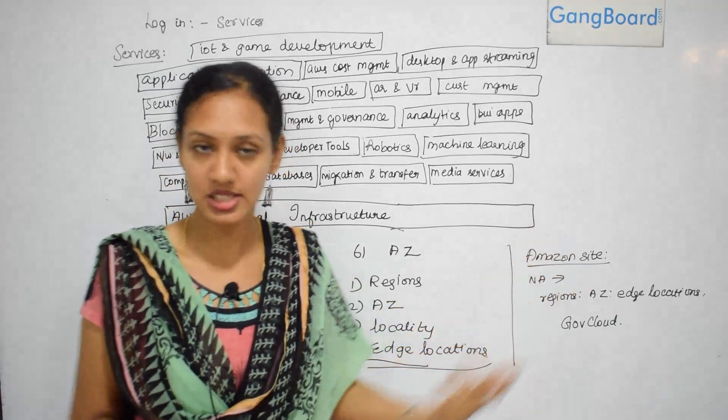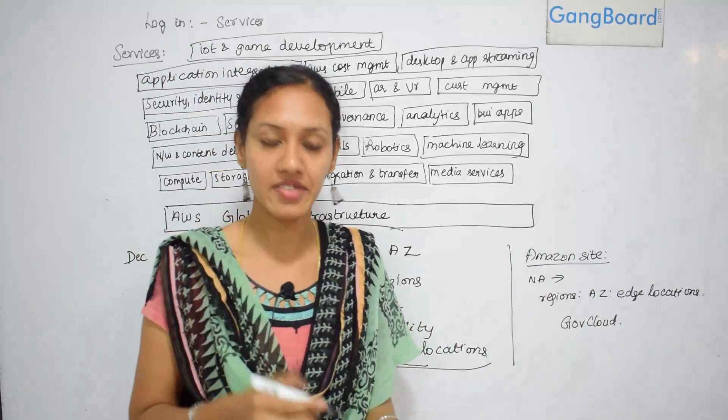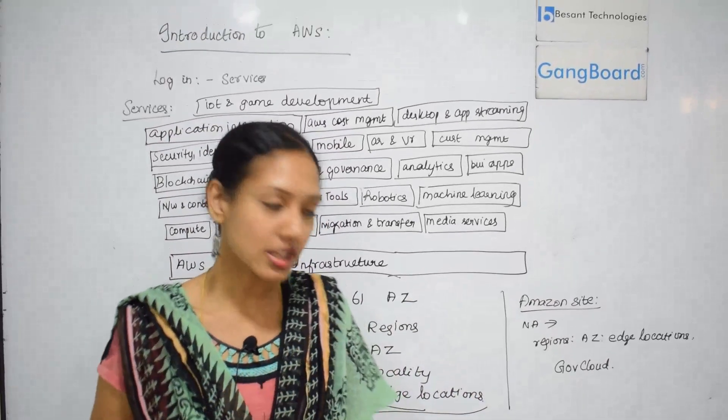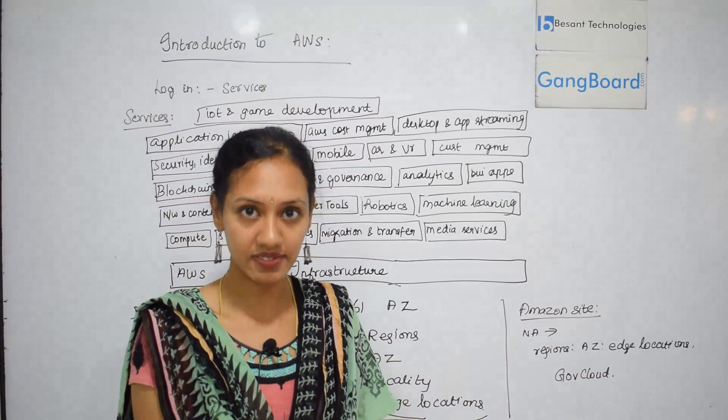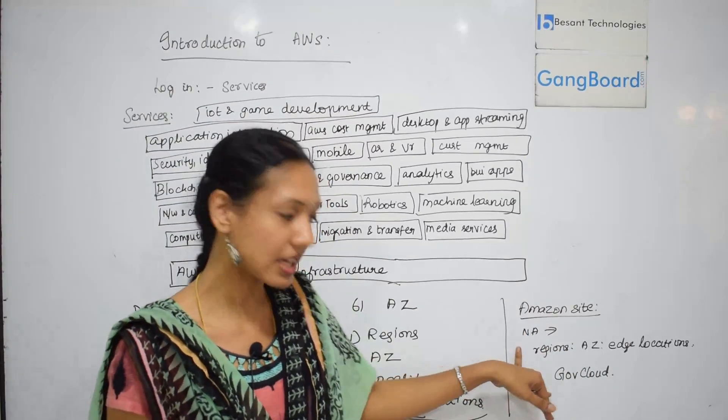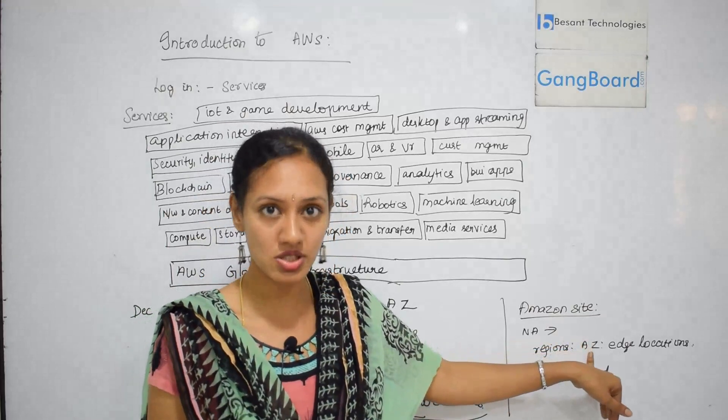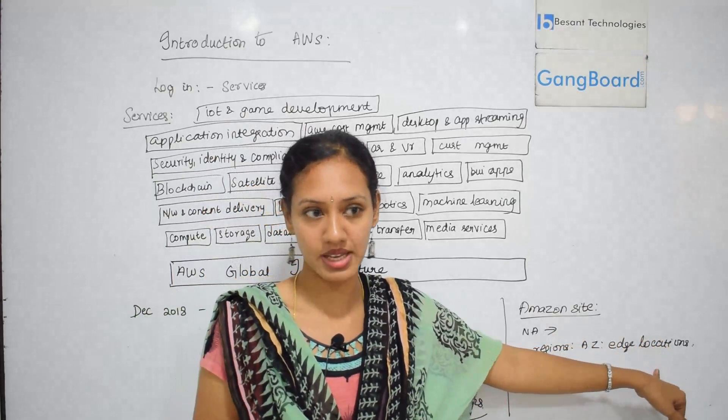When you log on to your AWS site, they will be having the different continents where they are put up. Say if you go onto North American continent, they will be showing all the regions where AWS is put up in North America. They will also show what are the availability zones in North America and also the edge locations in North America.